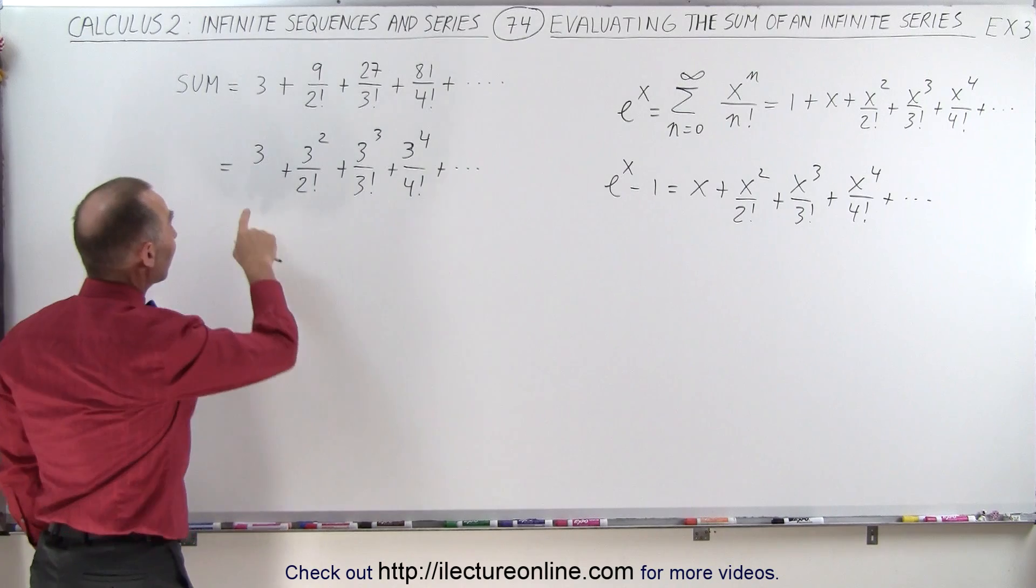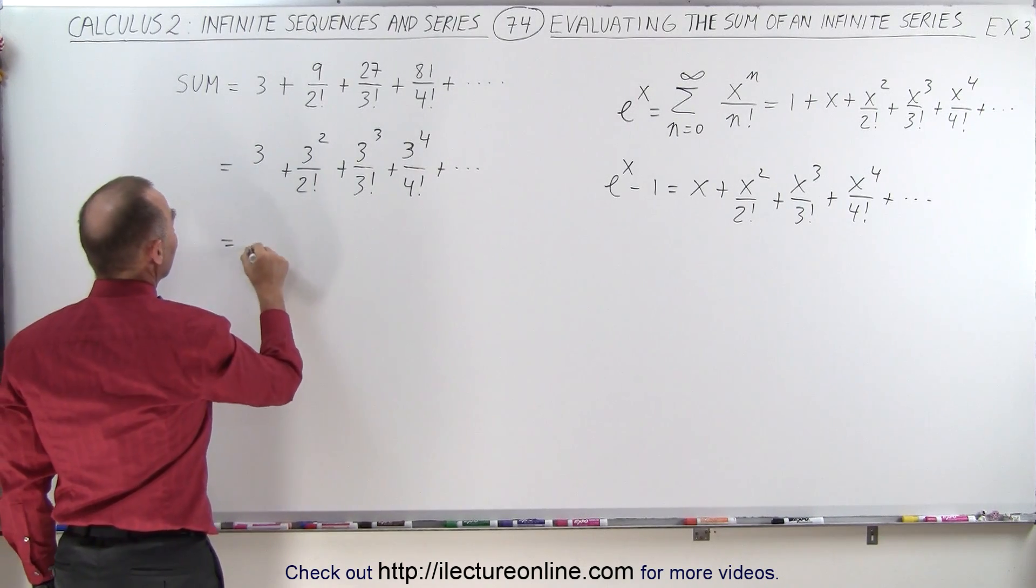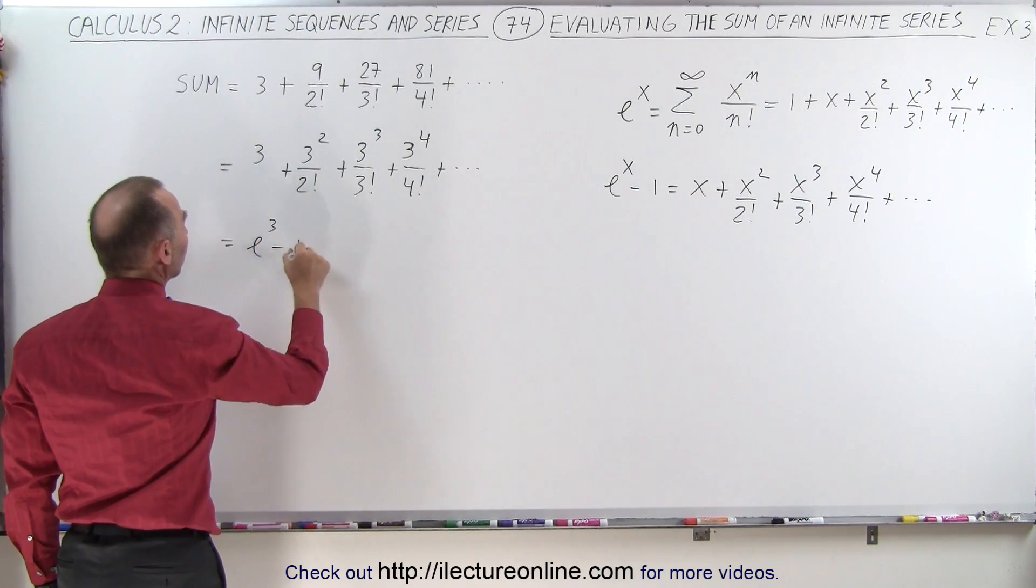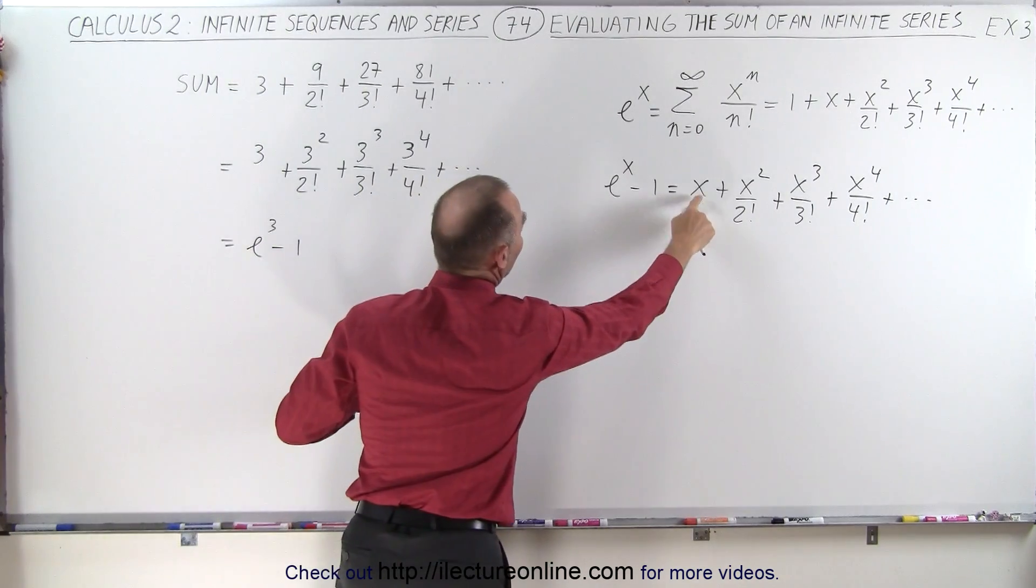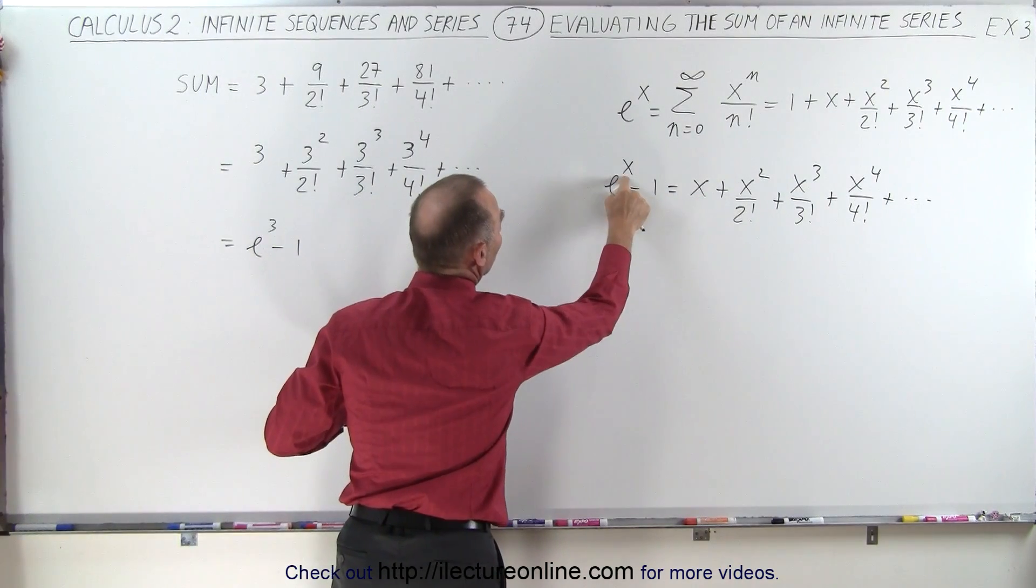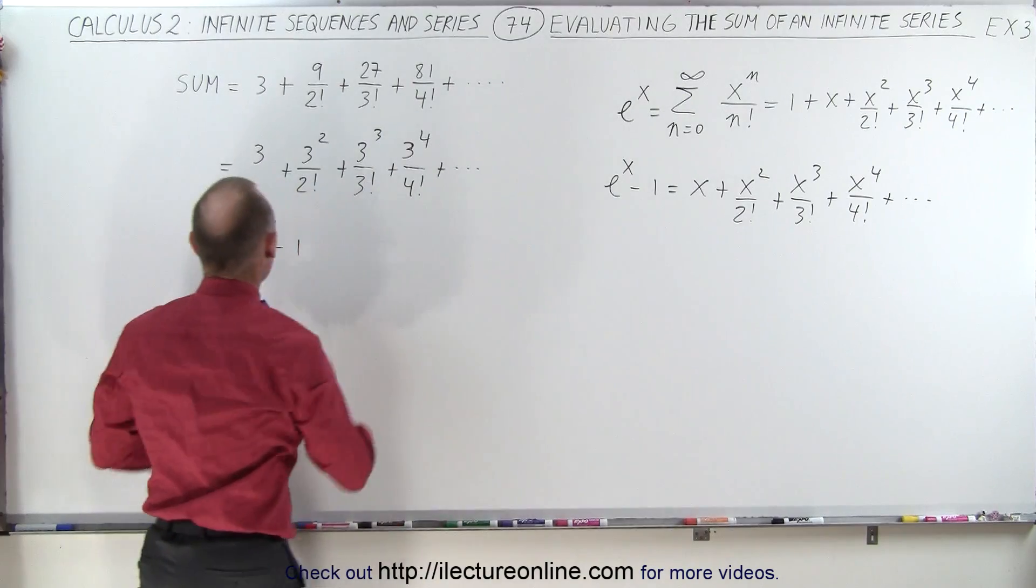So now we realize that this is equal to e to the third power minus 1, because if we replace every x here by a 3 we get e to the third power minus 1, which is what we have over here.